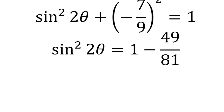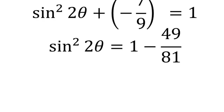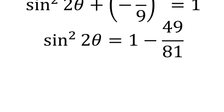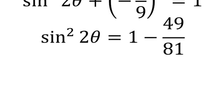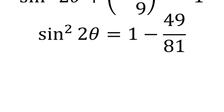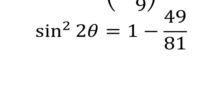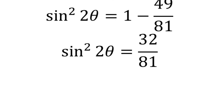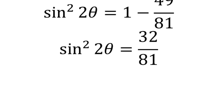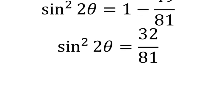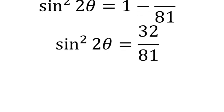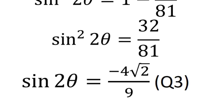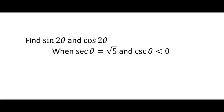Don't forget to square it and set that equal to 1. sin²2θ equals 1 minus 49/81, which is what negative 7/9 works out to when you square it. Working out 1 minus 49/81 gives 32/81. Taking the square root of both sides, a 16 comes out of the square root, meaning you get 4√2 on top and 9 on the bottom.